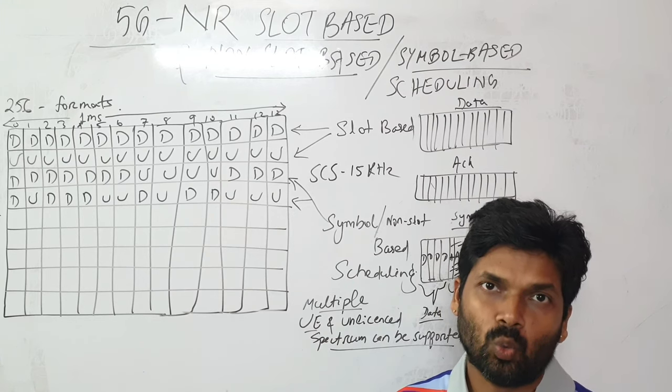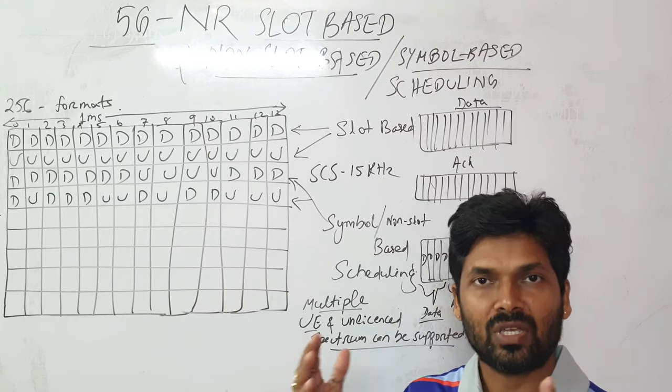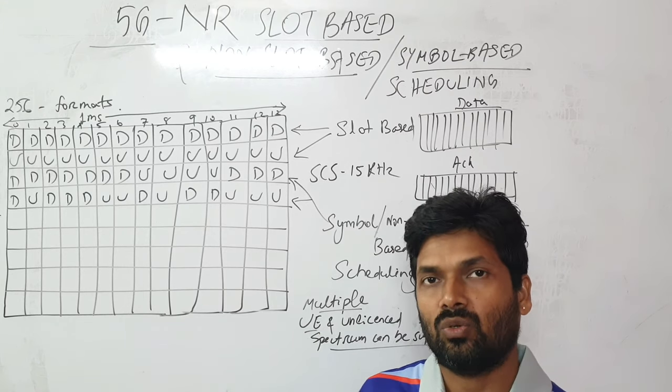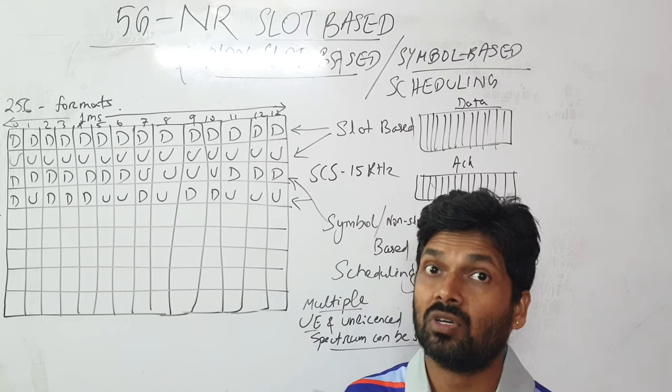There are two kinds of scheduling used in 5G NR. One is slot-based, which means you do transmission based on different slots in a radio frame. Let's say you have one radio frame of 10 milliseconds, and in one millisecond you have one slot of 14 symbols.